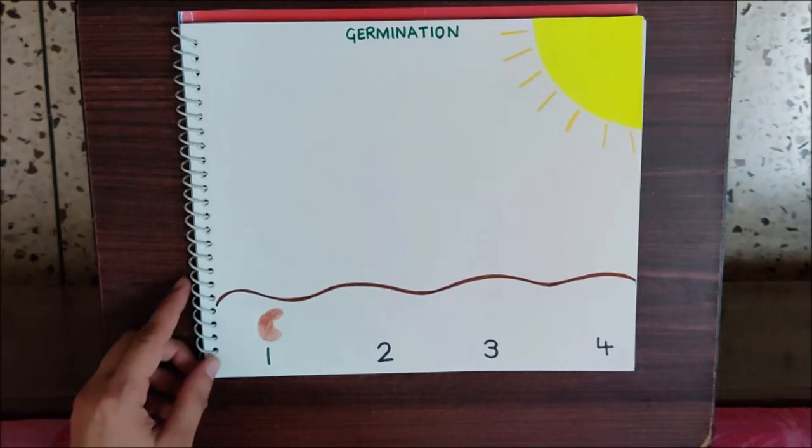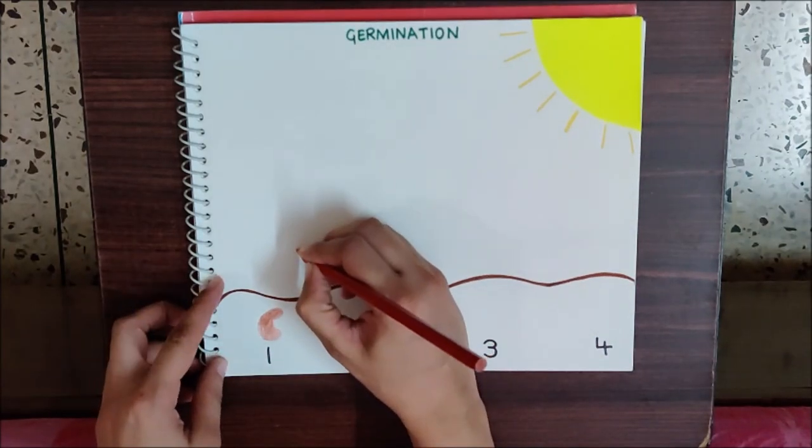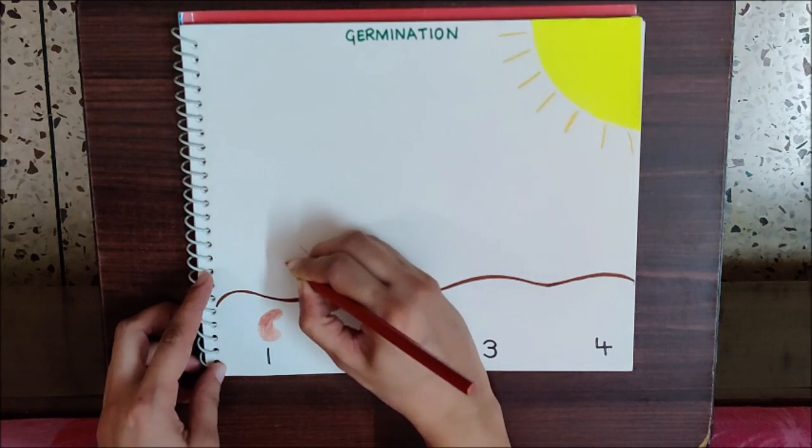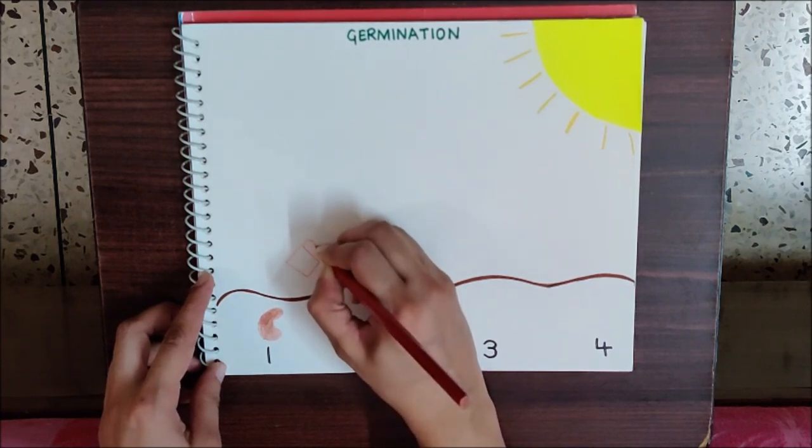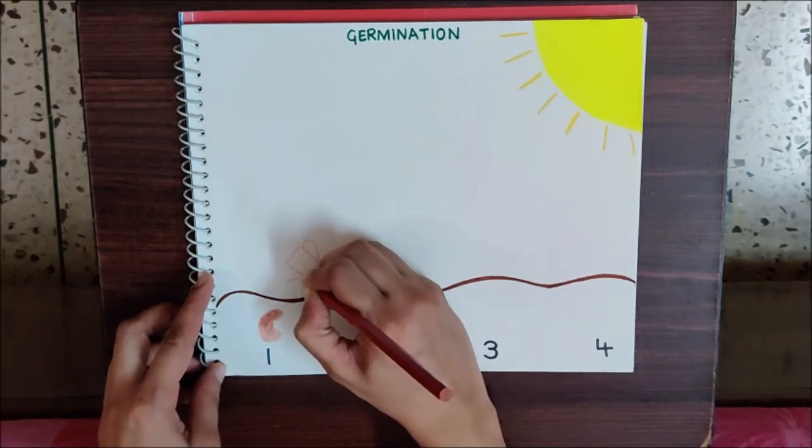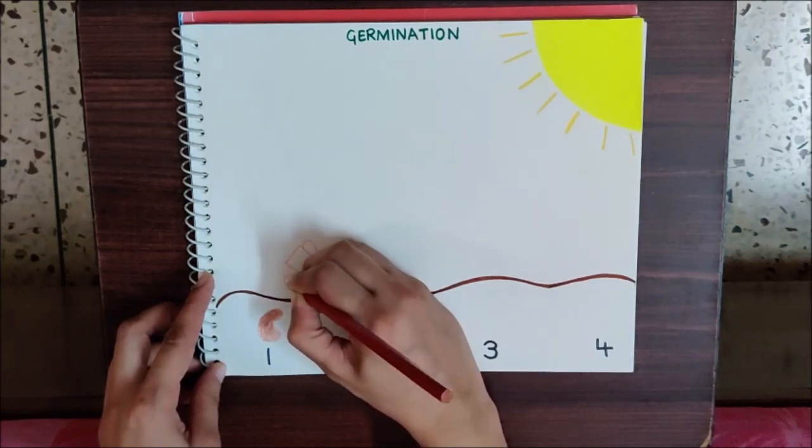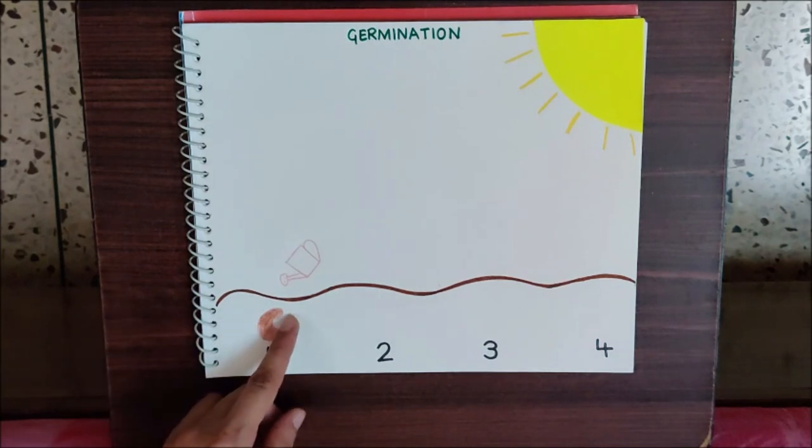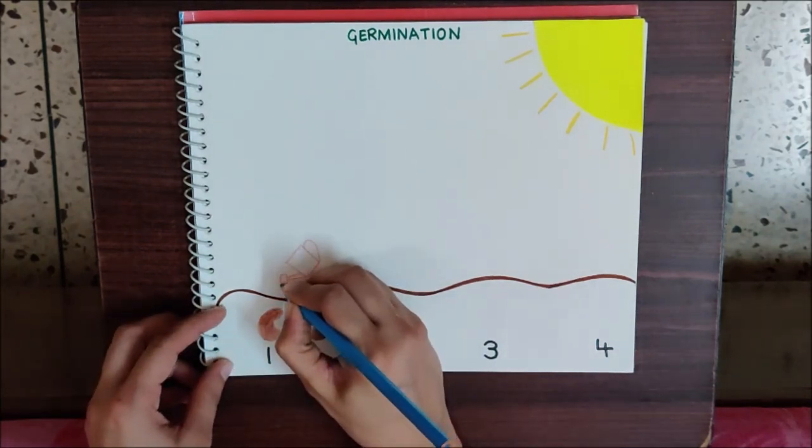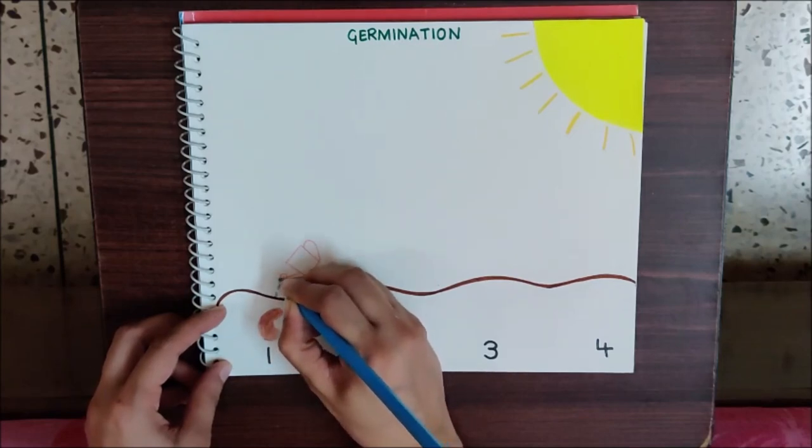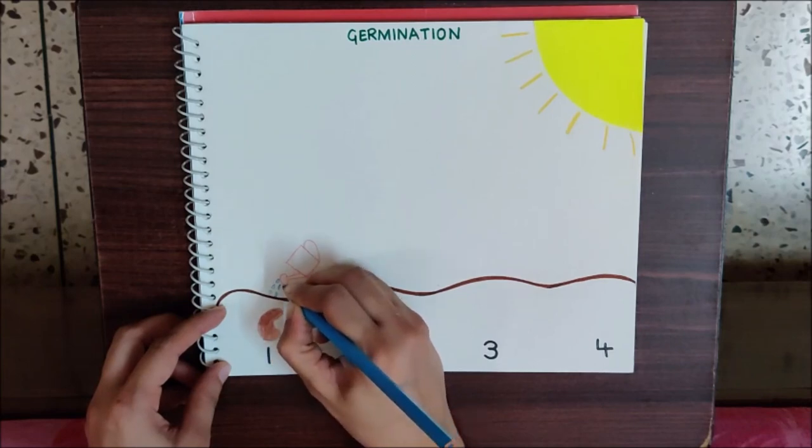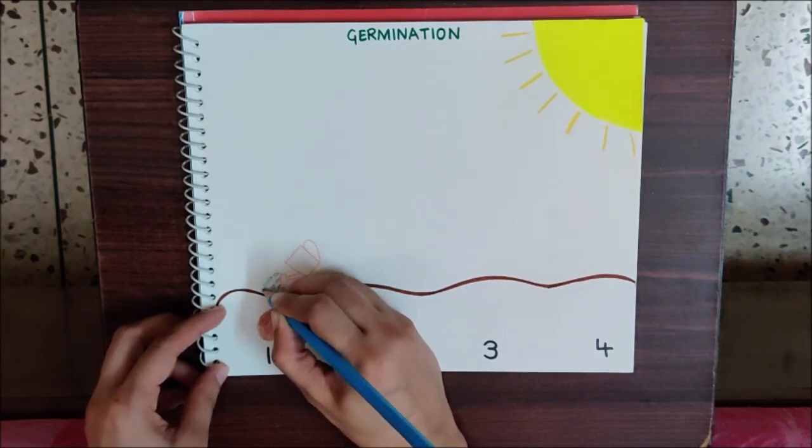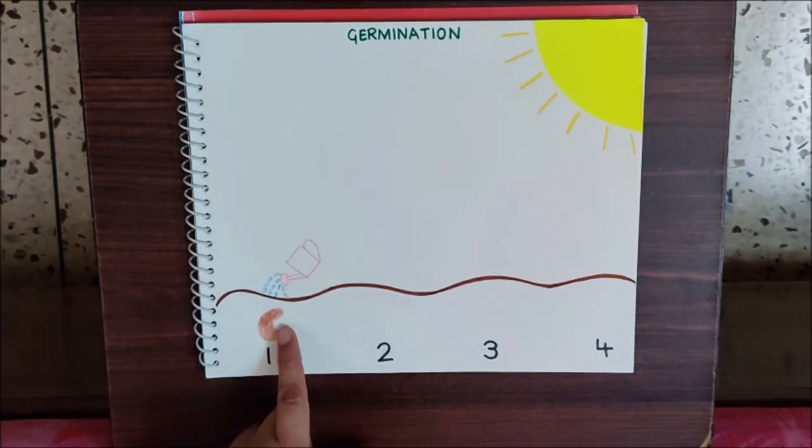And it also needs water. So I am drawing a water can. See, this is my water can, and I am watering the seed.